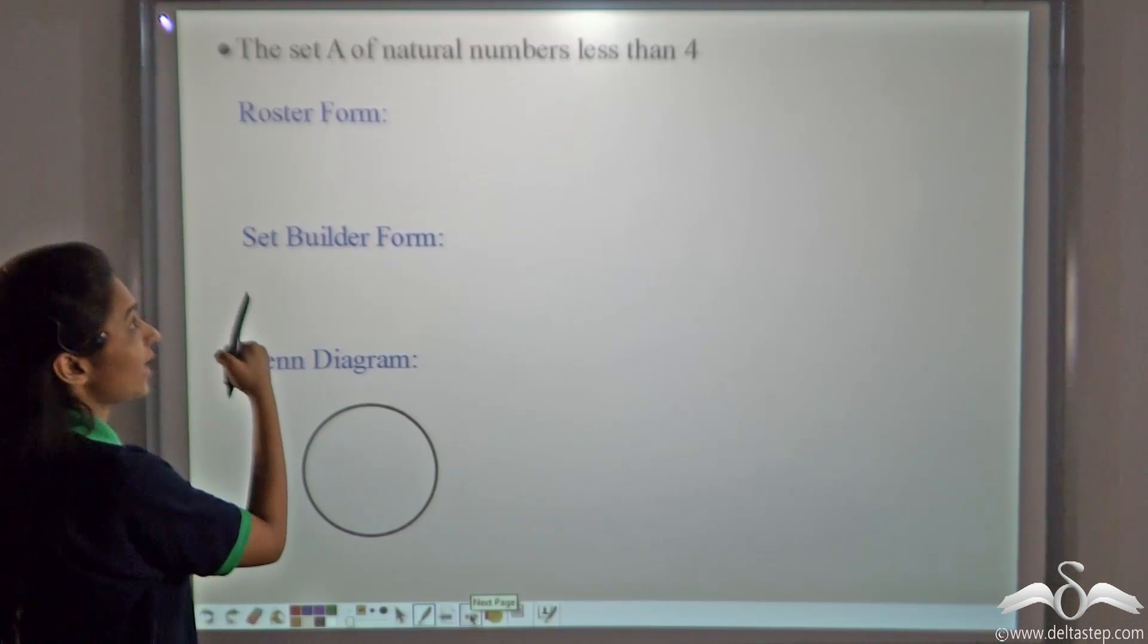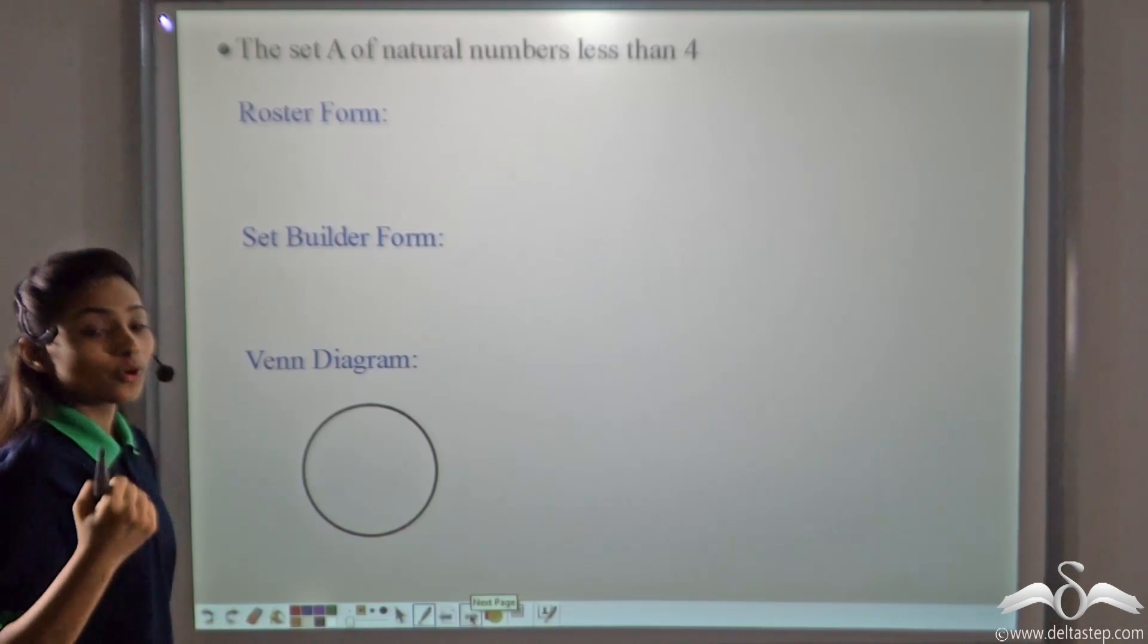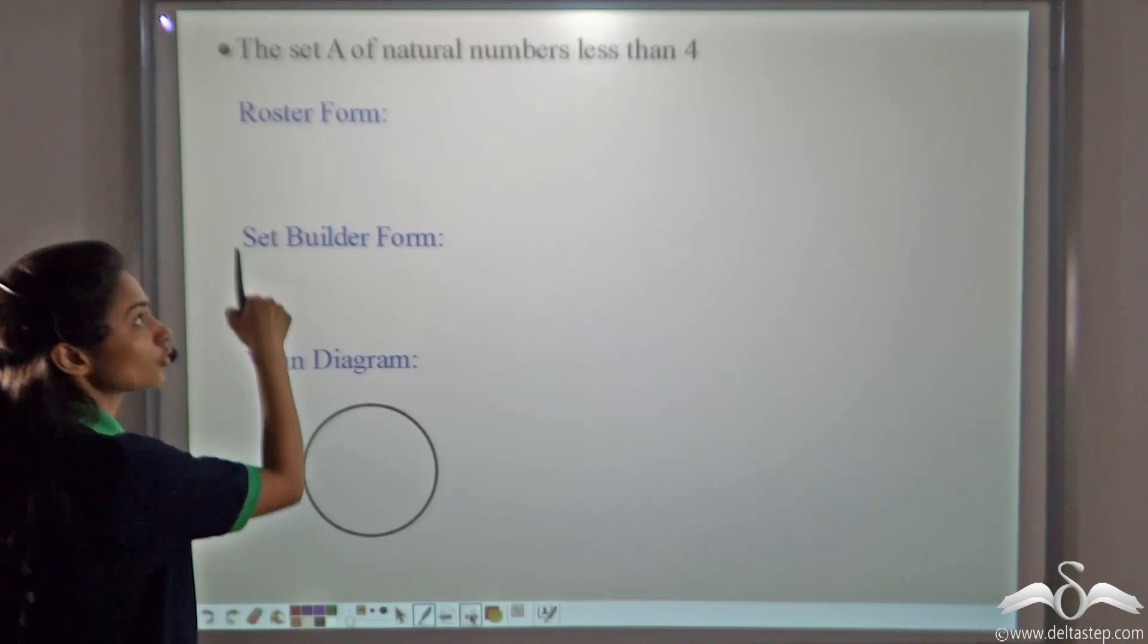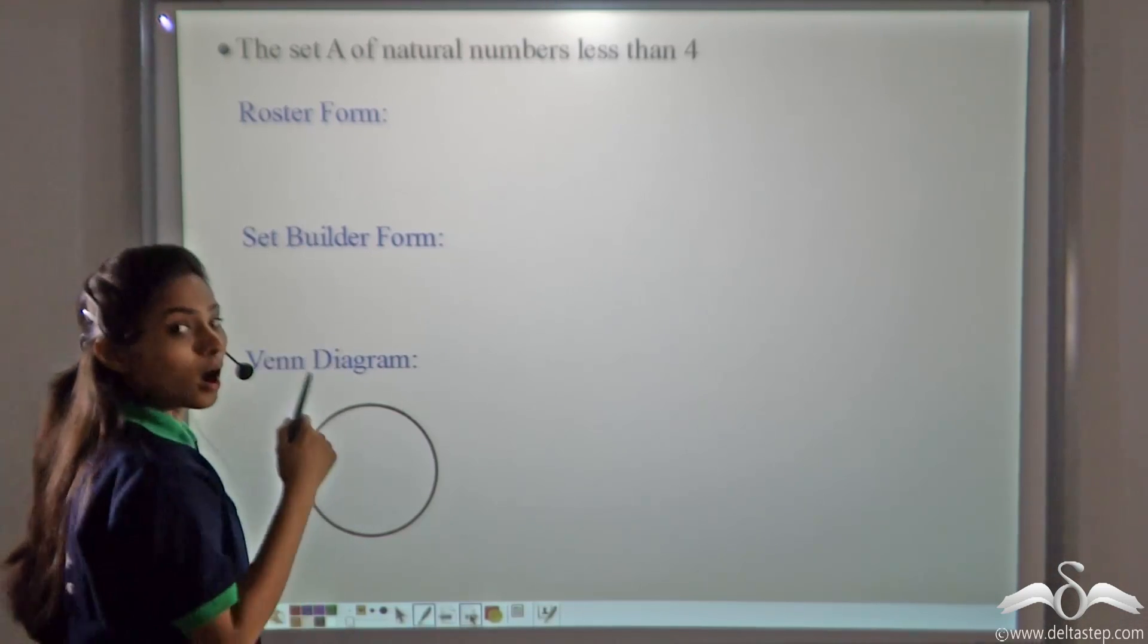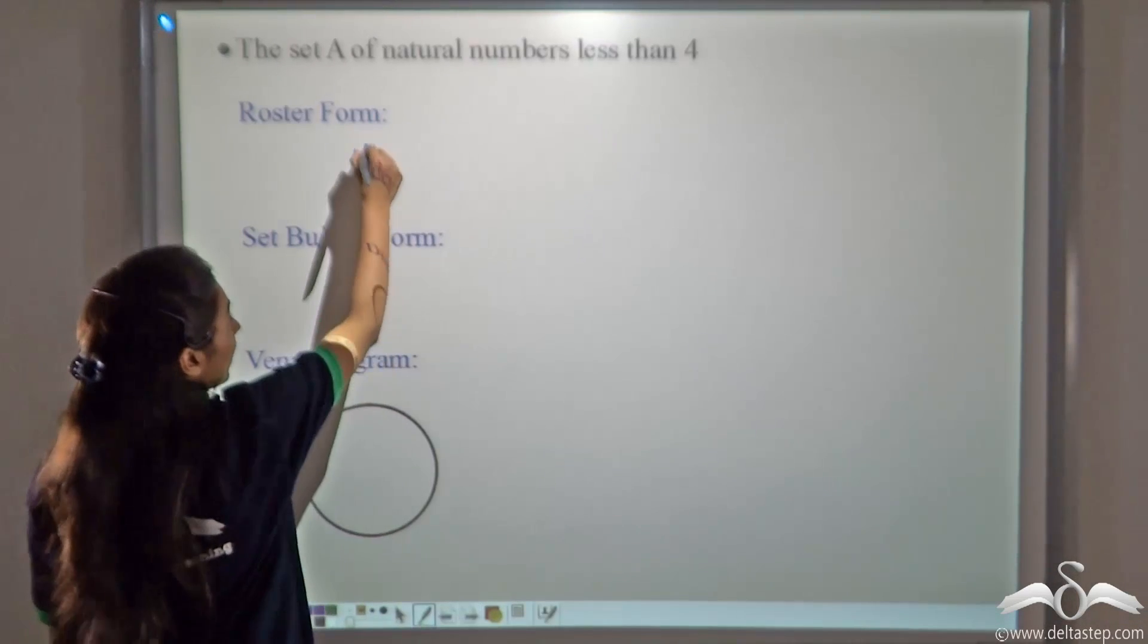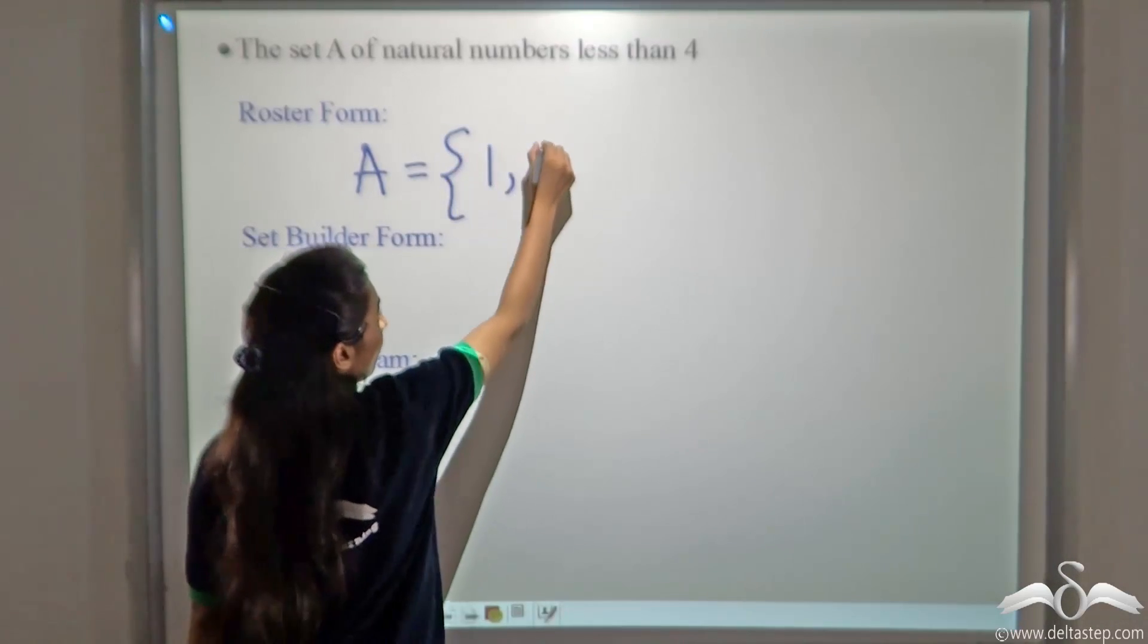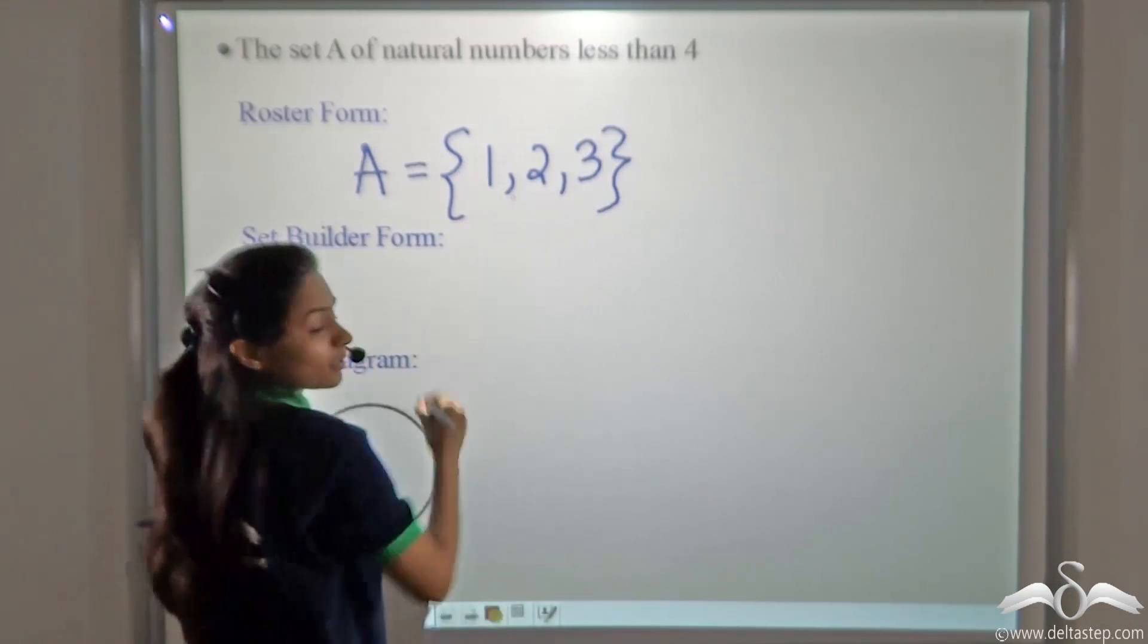Now the set A of natural numbers less than 4. Now you know all three forms to represent a set. So try writing this yourself. In roaster form, how will we write it? We will list the elements directly. So A equals curly brackets 1, 2, and 3. I have separated them with the comma.